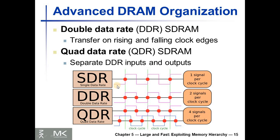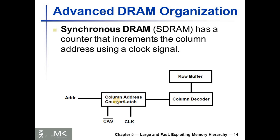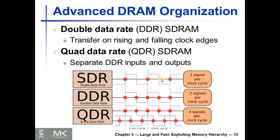At the beginning, the synchronous DRAM was single data rate — with each clock cycle that increments the counter, we read or write one word. The double data rate DRAM gives us two data words every cycle.